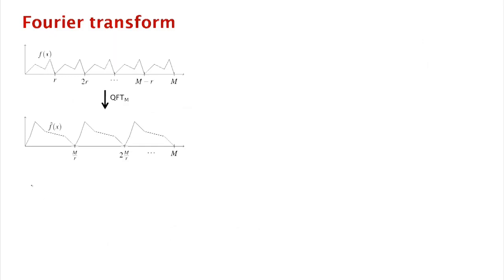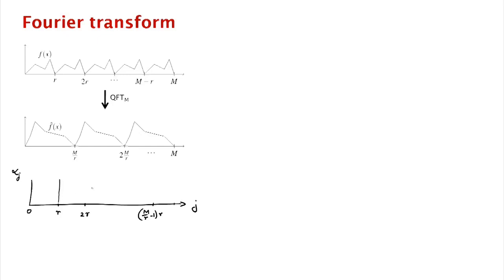Let's look at the special case we care about. We have j versus alpha_j, periodic with period r, but with non-zero values only at 0, r, 2r, ..., up to (m/r − 1)·r — that is, m-minus-r. Those are the only non-zero amplitudes, exactly m/r of them. To normalize this into a unit vector, the amplitude of each non-zero component must be √(r/m).